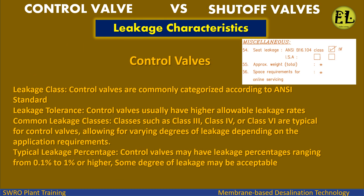Regarding leakage characteristics, control valves are commonly categorized according to ANSI standards. Control valves usually have higher allowable leakage rates, with common leakage classes such as Class 3, Class 4, or Class 6 being typical, allowing for varying degrees of leakage depending on application requirements. Control valves may have leakage percentages ranging from 0.1% to 1% or higher.